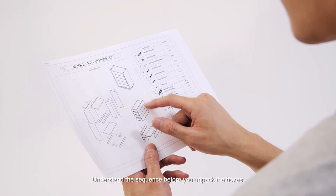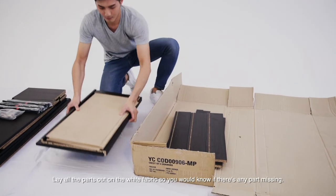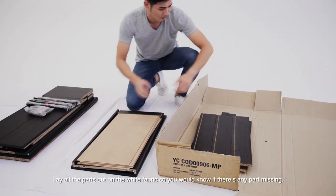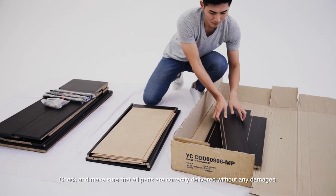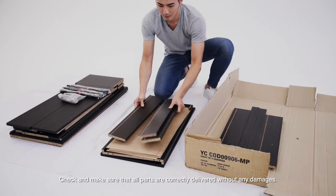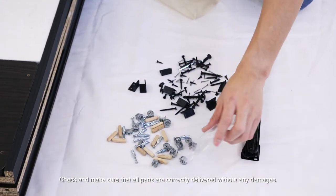Understand the sequence before you unpack the boxes. Lay all the parts out on the white fabric so you would know if there's any part missing. Check and make sure that all parts are correctly delivered without any damages.